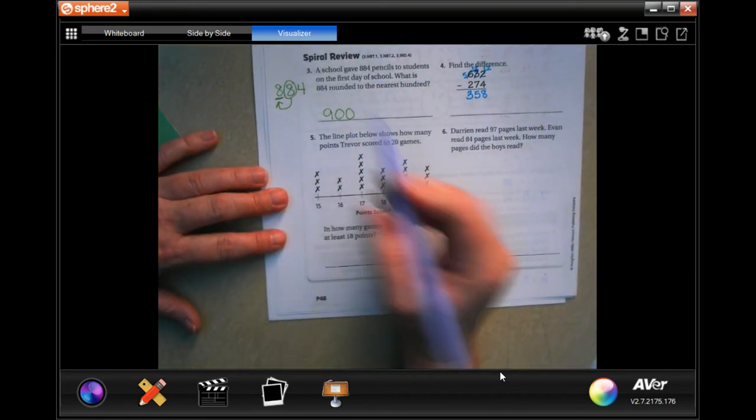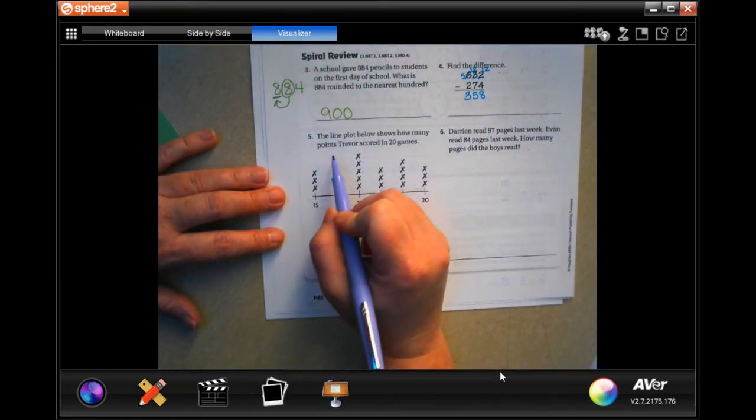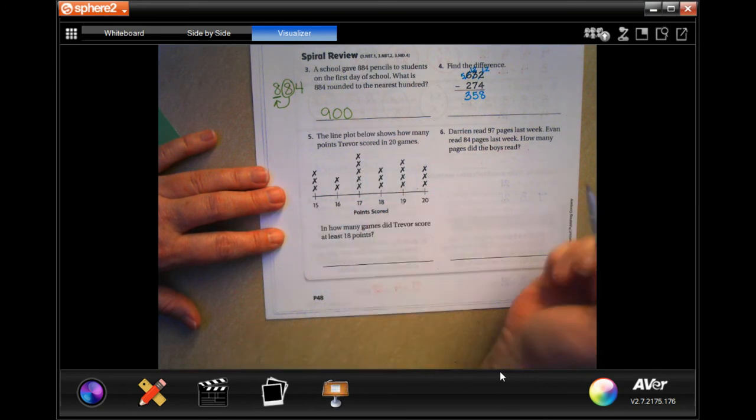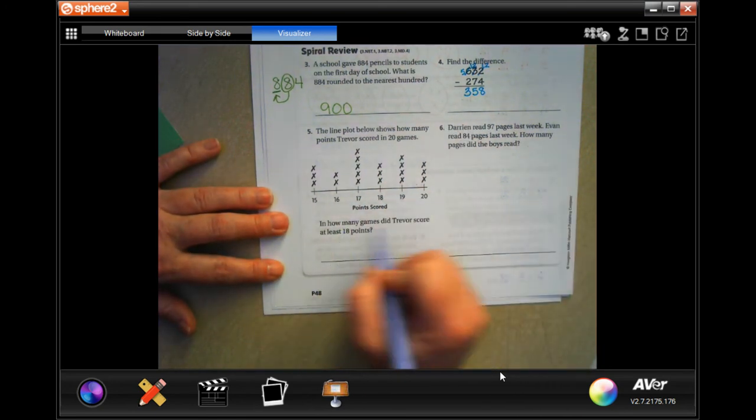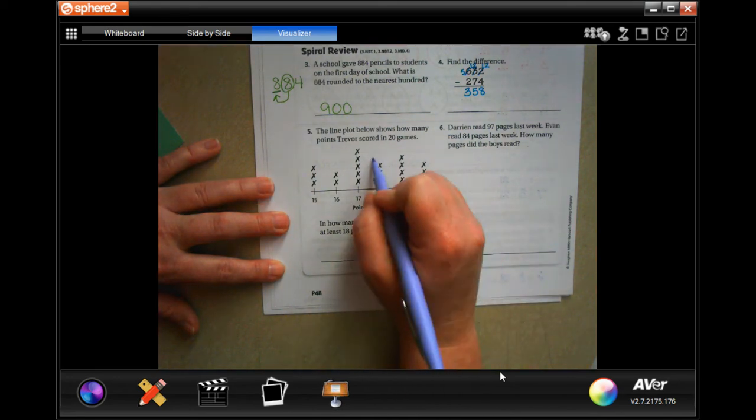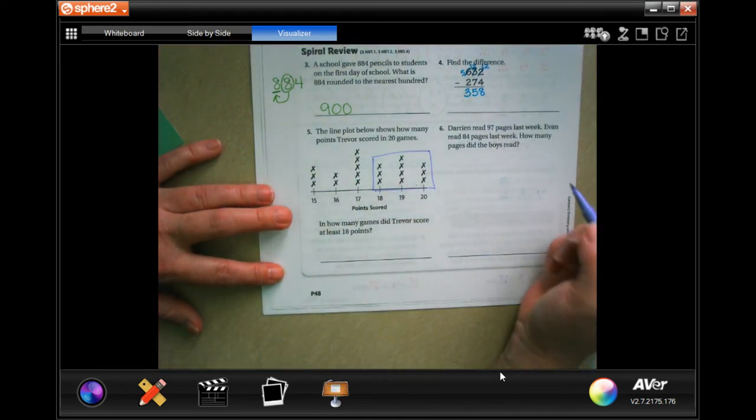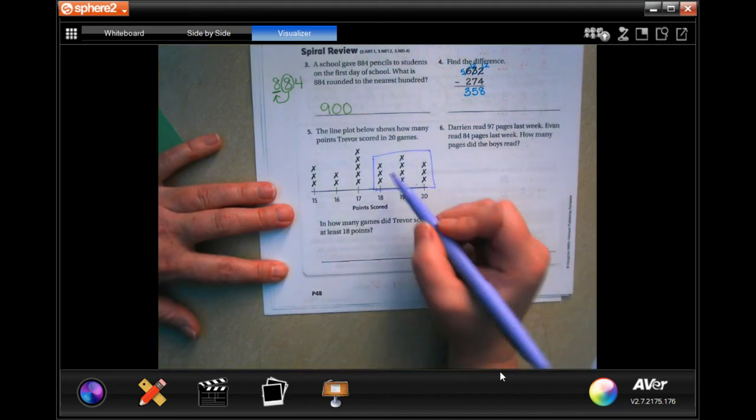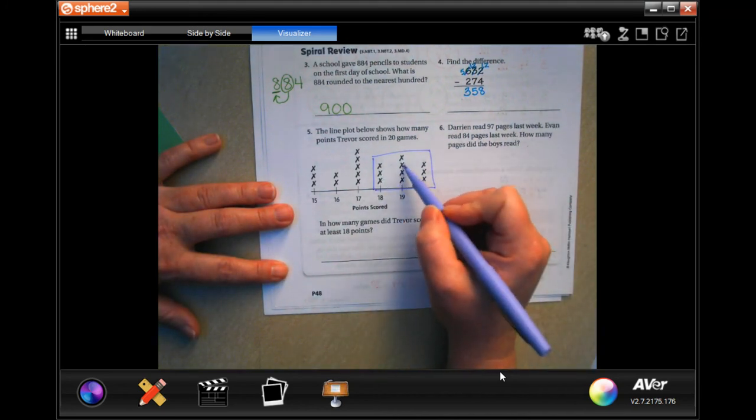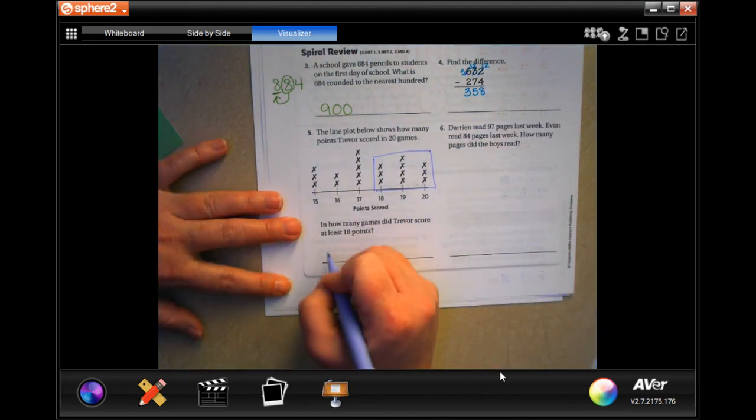The line plot below shows how many points Trevor scored in 20 games. How many games did Trevor score at least 18 points? So we need to know how many X's are in that box, 18 and above. One, two, three, four, five, six, seven, eight, nine, 10. 10 games.